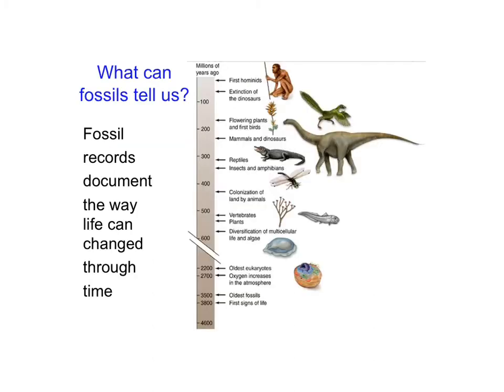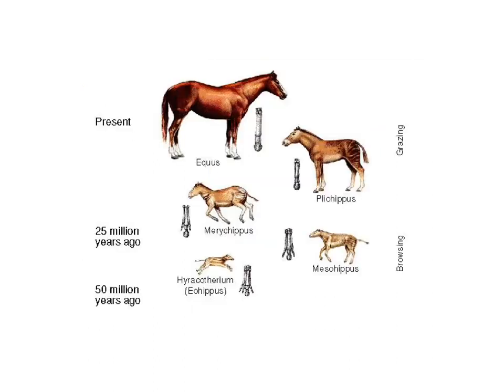So what can we tell from a fossil? Fossil records document the way life has changed through time. We can look and see that we started with single cells and then gradually it became more complex animals and plants. At some point we saw dinosaurs, birds, and then finally man. Just by looking at the ages of fossils and what kinds we're finding, we can tell how the earth has changed.